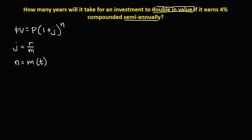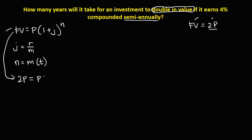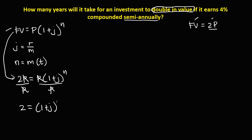Since we want to double the value, or double the principal, the future value equals 2 times P. Substituting 2P into the formula gives 2P equals P times 1 plus J to the power N. Dividing both sides by P, we get 2 equals 1 plus J to the power N.